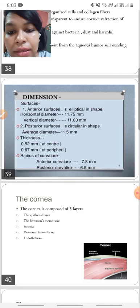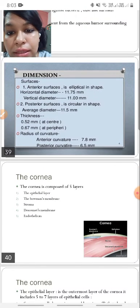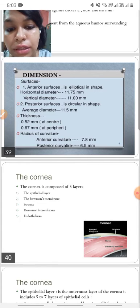The average horizontal diameter is 11.75 mm while the vertical is 11 mm. And thickness, it is thin at the center measuring about 0.52 mm, and thicker in the periphery measuring about 0.67 mm. The radius of curvature, the anterior one is 7.8 mm while the posterior is 6.5 mm.